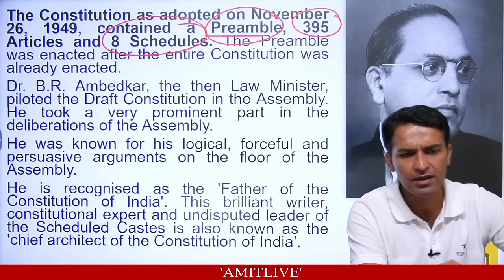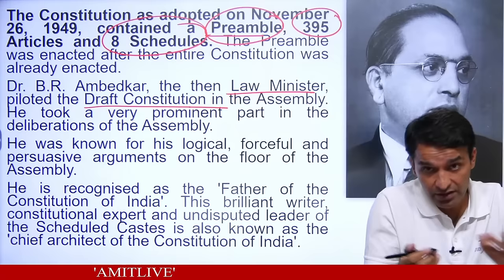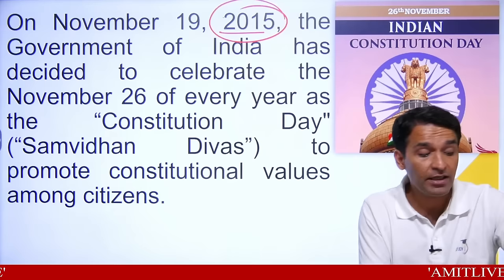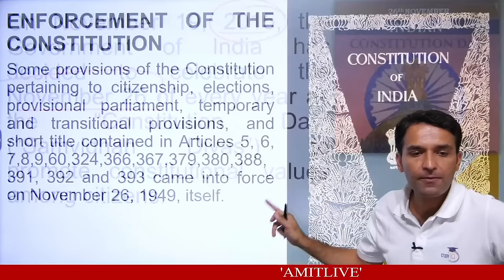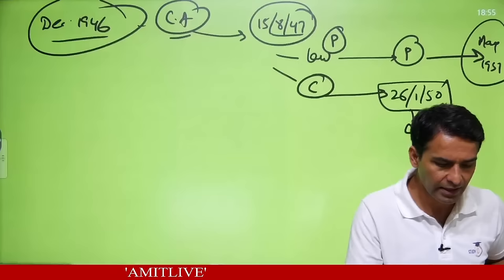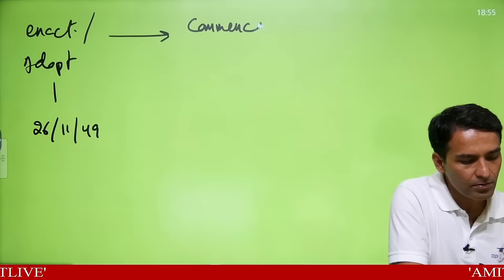Now the important part: there are two words — enactment and commencement. Enactment/adopt happened on 26th November 1949. Commencement happened on 26th January 1950. The reason for choosing January 26 was sentimental — it used to be celebrated as Swaraj Divas. So they chose 26th January — let's begin our constitution from that date.